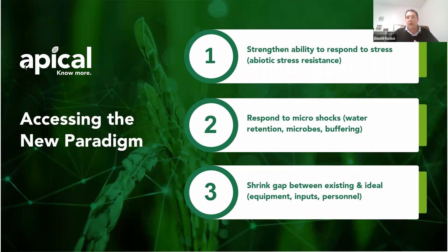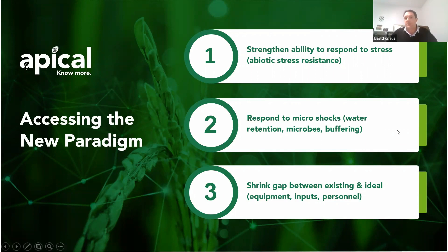So fundamentally and operationally, how do we do this? First, we strengthen the ability to respond to stress — a key component we've been discussing over the course of the last five weeks. Second, we respond to those micro-shocks on an on-farm system through microbes, buffering, fertilization, weather events, fortification, trying to hold water in the soil, and so forth. Last but not least, we shrink the gap from ideal to existing in a lot of different ways on the farm.